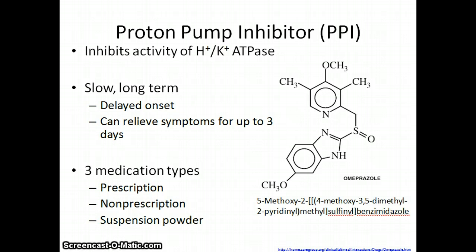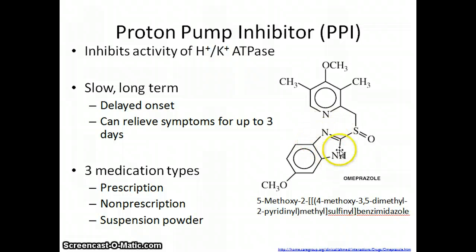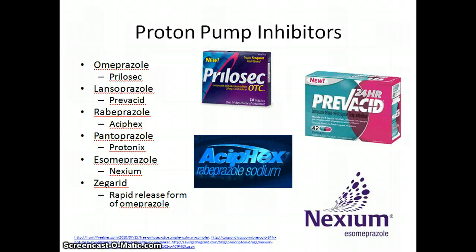There are three medication types: prescription, over-the-counter, and a suspension powder. The most common chemical used is omeprazole. The imidazole derivative — a functional group containing three carbons, four hydrogens, and two nitrogens — is of core importance in the inhibiting of the proton pump. Notice how most of these proton pump inhibitors contain the imidazole group, as indicated by the suffix of their name. Common proton pump inhibitor brand names include Prilosec, Prilosec OTC, Prevacid, and Nexium — the purple pill.